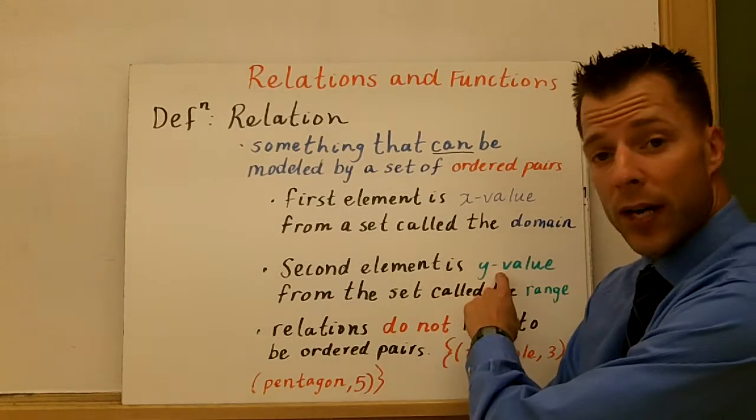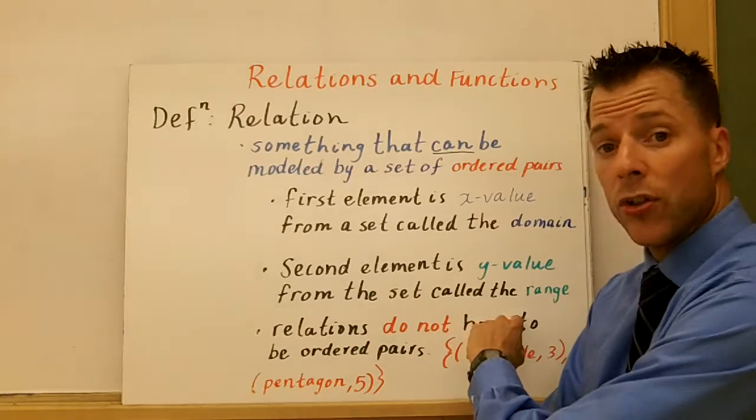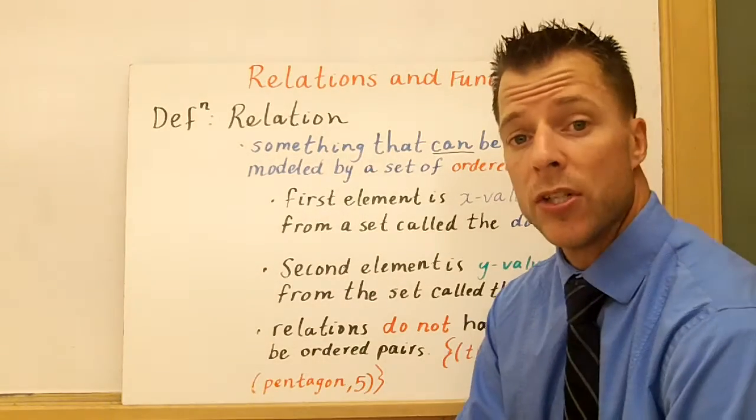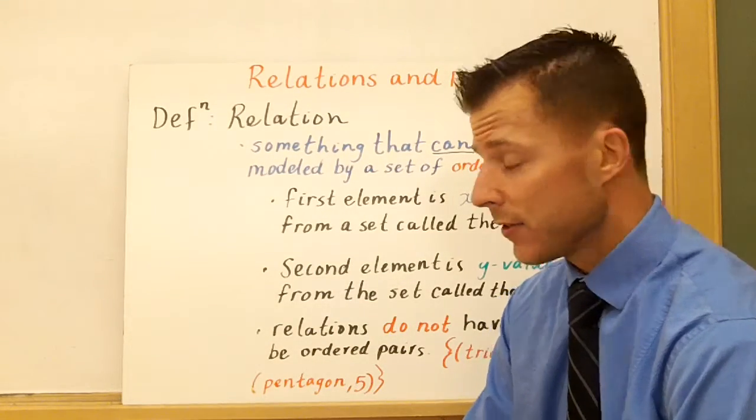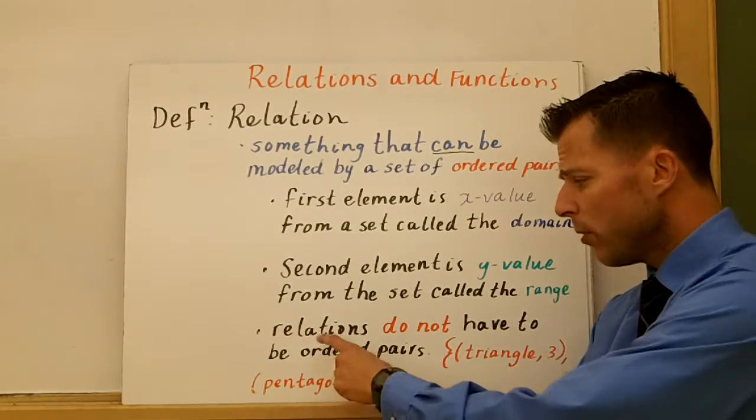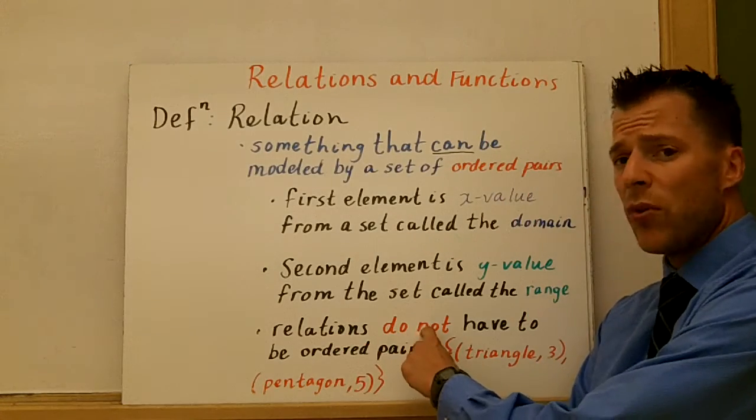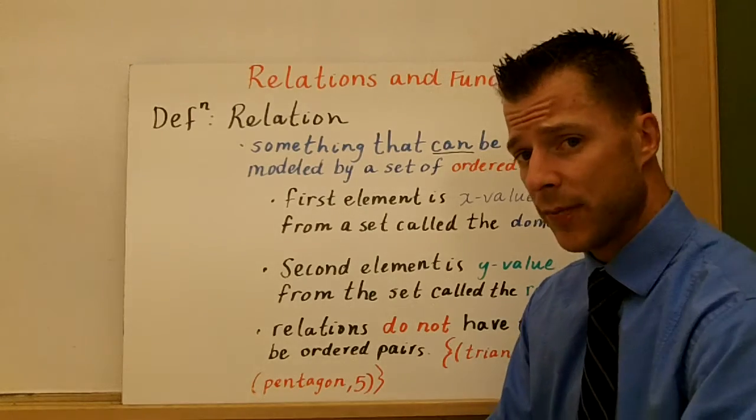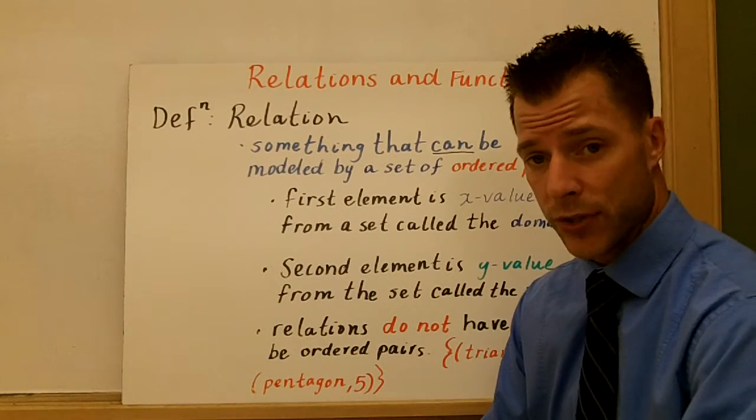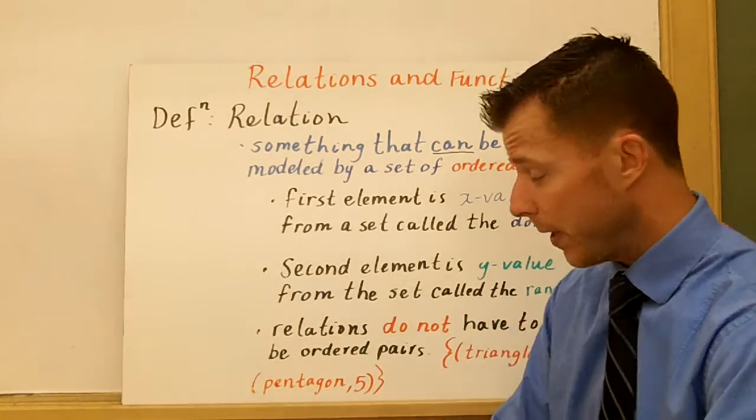The second element is the y value, and that comes from the set called the range. We'll discuss domain and range at a later time. And the important thing to remember is, relations don't always have to be ordered pairs.